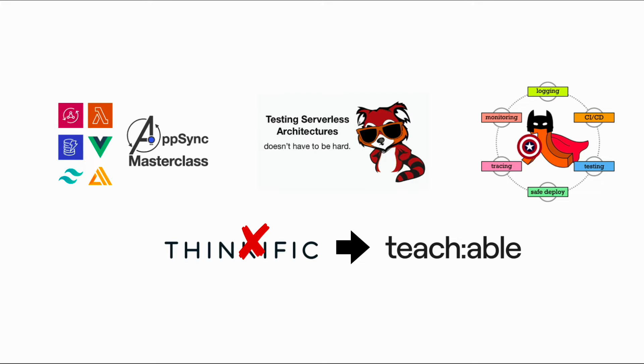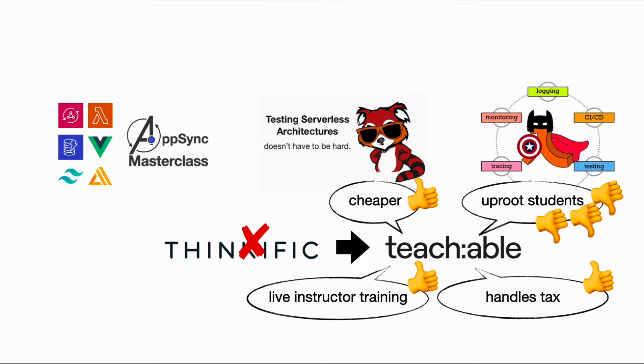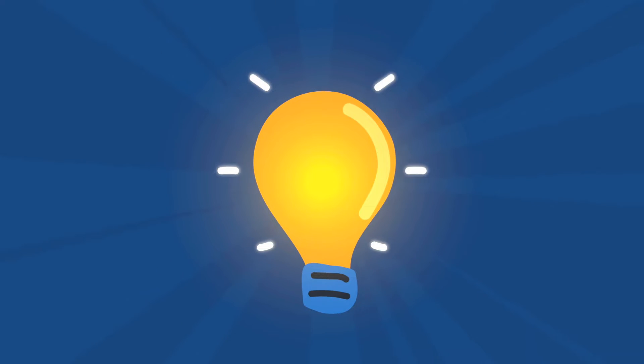Because Thinkific can't be trusted with taking payments since it doesn't handle tax, I can't just use its affiliate system. The obvious solution was to switch from Thinkific to Teachable, which handles tax correctly and supports both digital products and live instructor training at a lower cost — but I'd have to uproot and move all my students, which feels too disruptive. So I started looking for affiliate tracking software, discovered all the popular tools are pretty expensive, and decided I could just build this myself with serverless in less than a weekend.